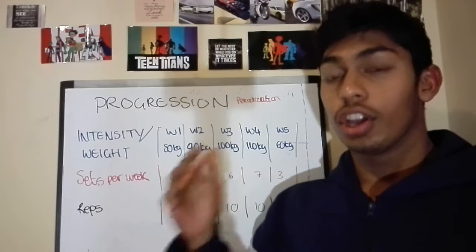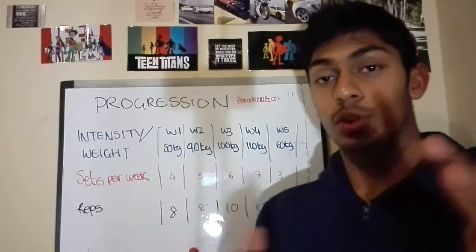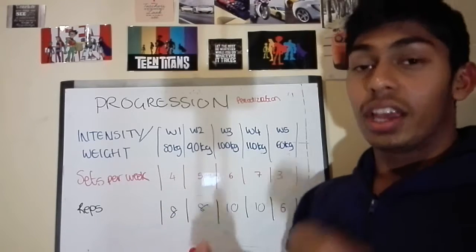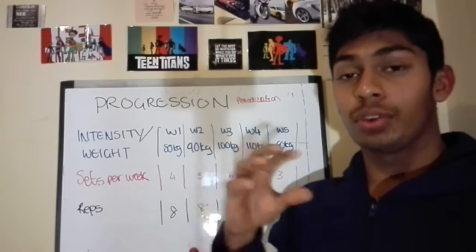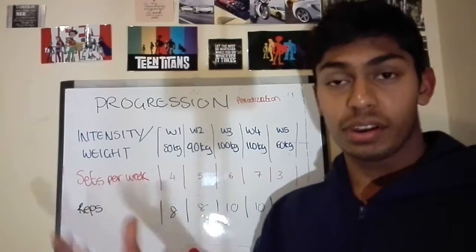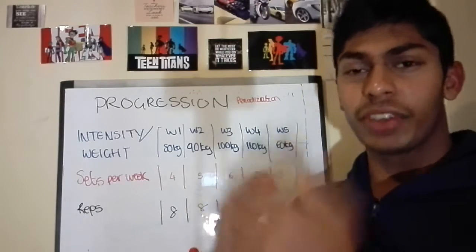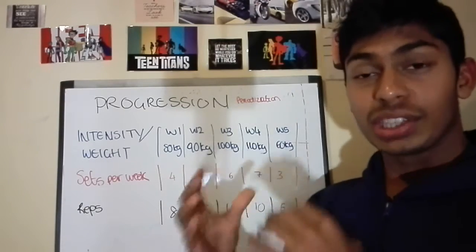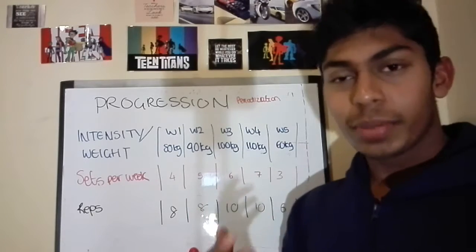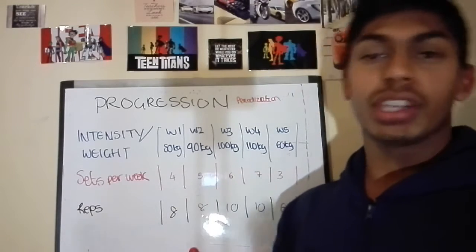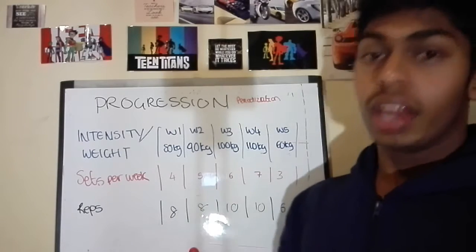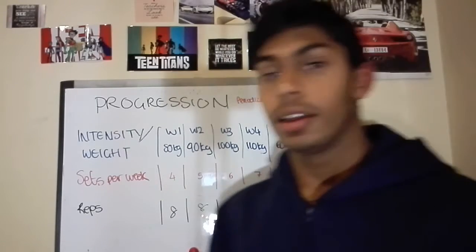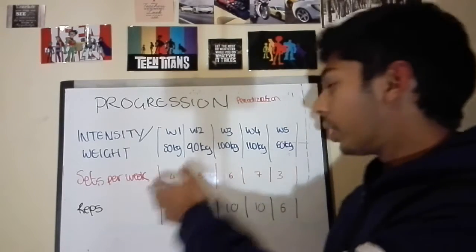On the bench press, you might be incrementing somewhere between two to five kilograms. It's not only exercise-specific — it's also dependent on the individual and your training experience. You need to choose which weight increments you're going to use. Experiment: start off with two kilograms, try five, then try 10. You just want to step it up if you can.